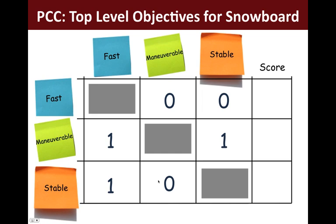Now you should see why this is called a pairwise comparison chart — we've compared all of our objectives as individual pairs. Lastly, we add up the scores in each row to get a 0 for fast, a 2 for maneuverable, and a 1 for stable. The highest number, 2, tells us that maneuverable is our most important objective, followed by the 1 for stable. The 0 indicates that fast is our least important objective. That doesn't mean that it is unimportant — after all, we have identified being fast as an important objective. It just means that we shouldn't sacrifice stability and maneuverability for speed in this particular design.